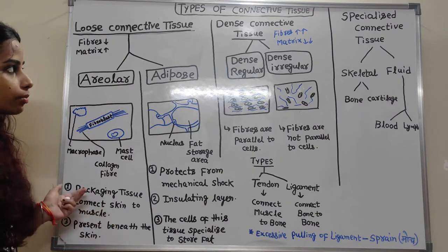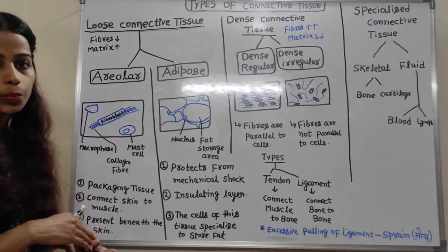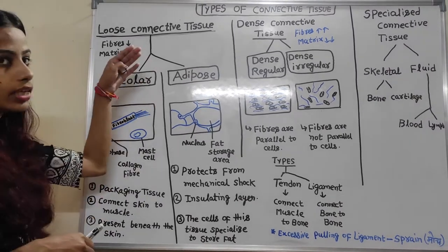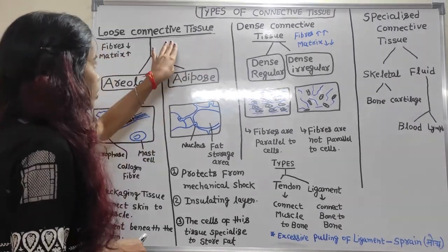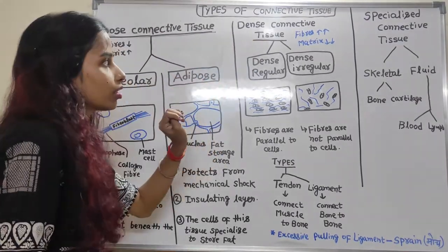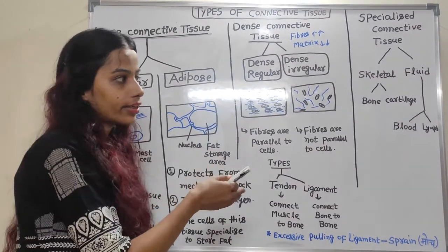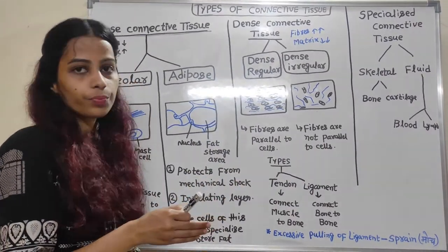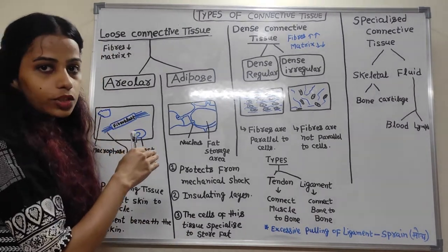Connective tissue is usually divided into two: connective tissue proper and specialized connective tissue. Connective tissue proper is further divided into loose connective tissue and dense connective tissue. Specialized connective tissue is divided into skeletal and fluid connective tissue. So let's start with the loose connective tissue.